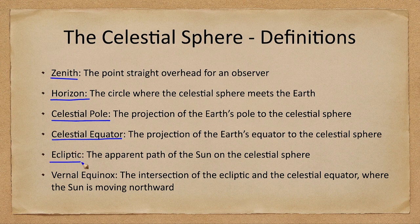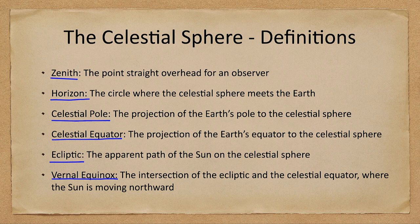We have the ecliptic, which is the apparent path of the sun — the path that the sun appears to take. The vernal equinox is the intersection of the ecliptic and the celestial equator when the sun is moving northward. There are two intersections: the vernal equinox when it's moving northward, and the autumnal equinox when it is moving south.